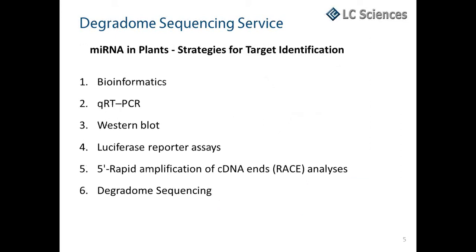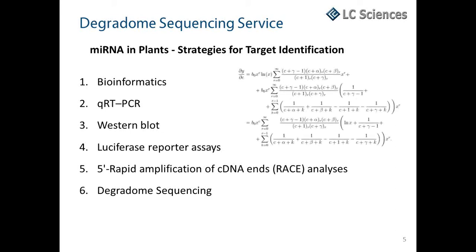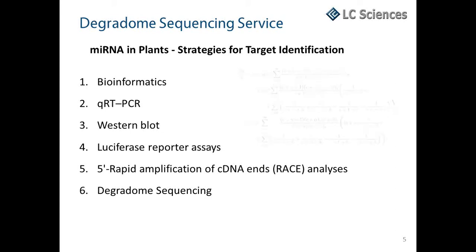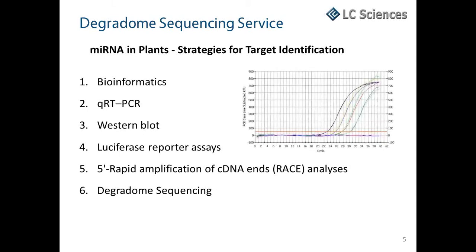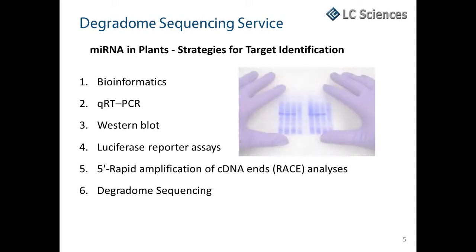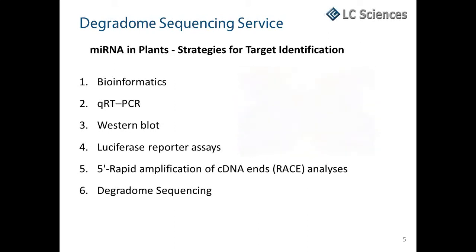There have been several strategies used to identify microRNA targets in plants. Initially, bioinformatics is used to identify targets, but that requires experimental confirmation and is subject to false positives and false negatives, meaning you could miss some bona fide targets. There are also gene-specific methods such as qPCR and western blot; however, these methods will not distinguish between direct and secondary microRNA targets.